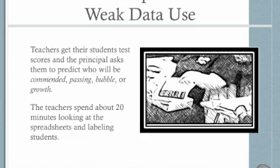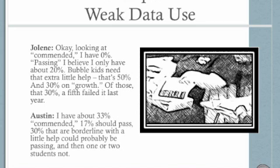And the principal asked the teachers to predict which of their students would be commended passing bubble or growth on the state test. And the teachers spent about 20 minutes looking at the spreadsheets and then using what they knew and observed of the kids in the classroom, trying to make some kind of prediction about which kid would be where by the time state testing. And the principal had an interest in doing this because he wanted to think about supplementary instruction, additional instruction, and remediation strategies.